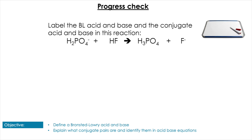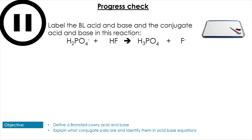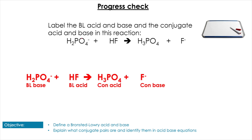Now a question for you — label the Bronsted-Lowry acid and base and their conjugates in the given reaction. Pause the video to give yourself some time. The first ion was gaining a proton, so it's acting as the base, and the HF is losing a proton so it's acting as the acid, with the products as their respective conjugates.